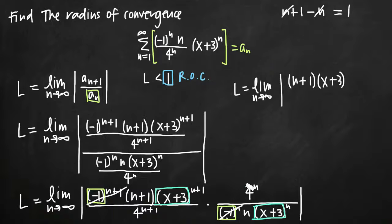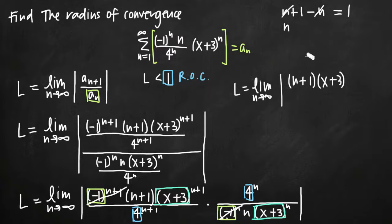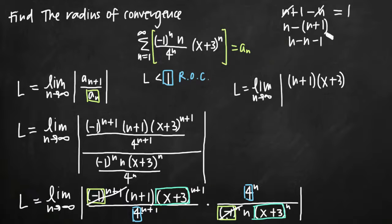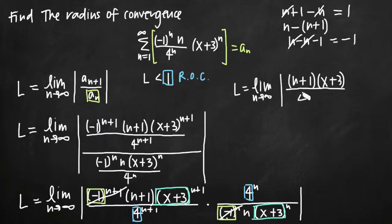Finally, we have 4 raised to the n in the numerator and 4 raised to the n plus 1 in the denominator. Taking the numerator exponent n minus the denominator exponent n plus 1 gives n minus n minus 1, which simplifies to negative 1. That means we're left with 4 to the first power in the denominator — so just 4 in the denominator. And we also have the n value in the denominator that doesn't cancel with anything.